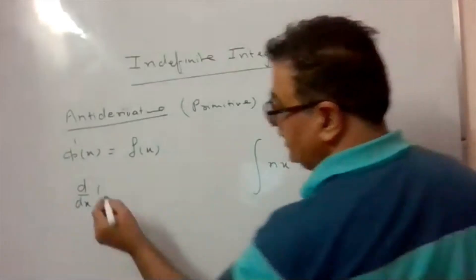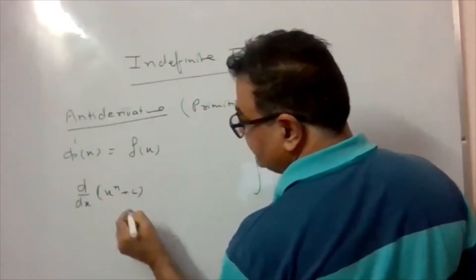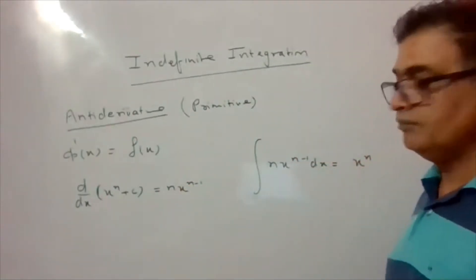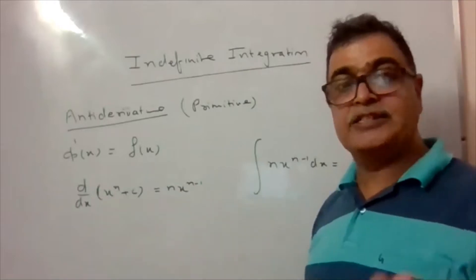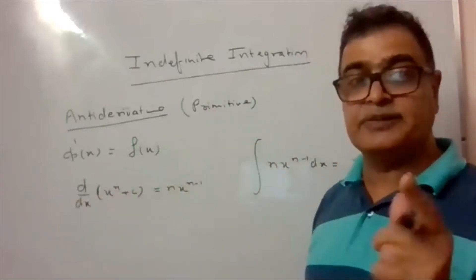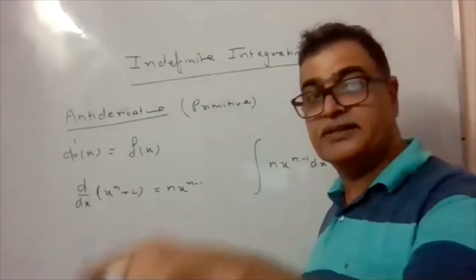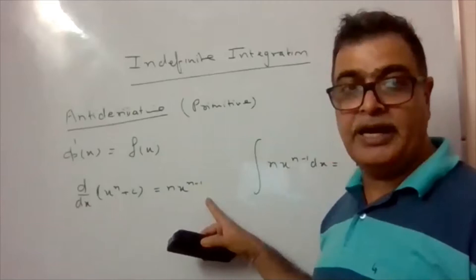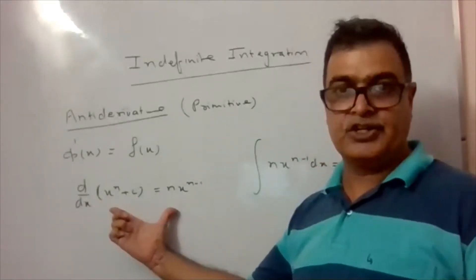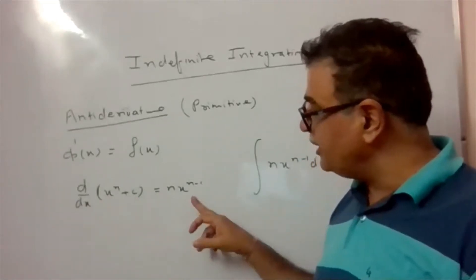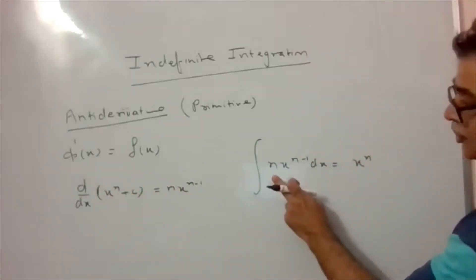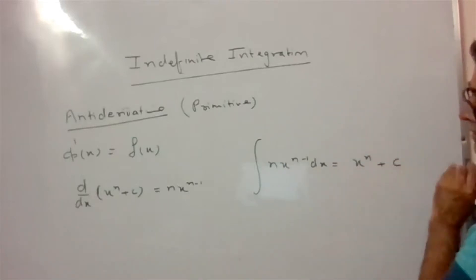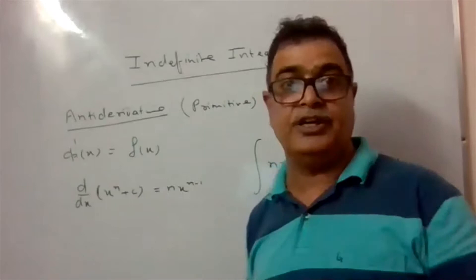One more thing to keep in mind: x^n + C also has the same derivative n·x^(n-1). Similarly x^n + 1 or x^n + 2 — any constant added gives the same derivative. So the general representation is: integration of n·x^(n-1) dx equals x^n + C.